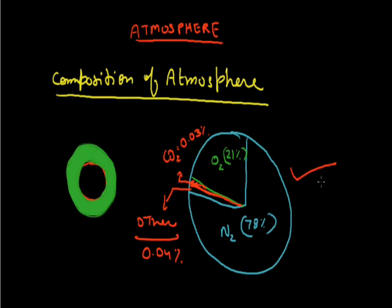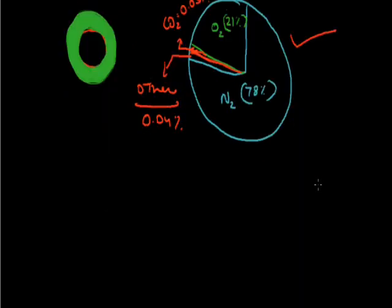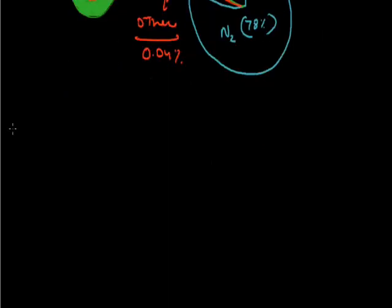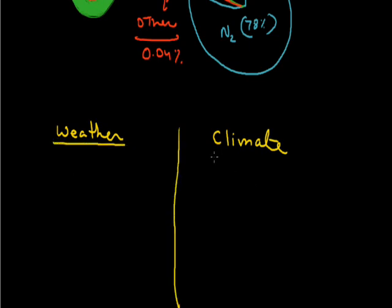Now let us come to next topic and that is what is the difference between weather and climate. If we come to weather then weather is hour to hour or day to day conditions of the atmosphere - a hot, a humid or a rainy weather like today.